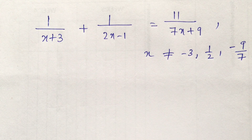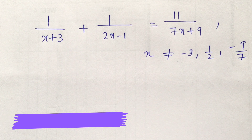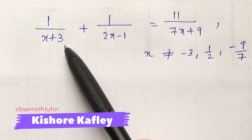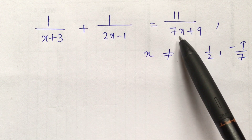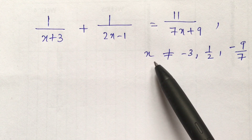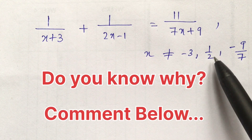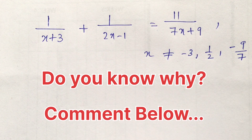Hello friends, welcome to CVSC math tutor. Today we are going to solve a special type of quadratic equation in which the equation is given as 1/(x+3) + 1/(2x-1) = 11/(7x+9), where x is not equals to -3, x is not equals to 1/2, and x is not equals to -9/7.